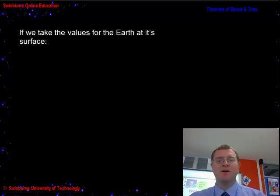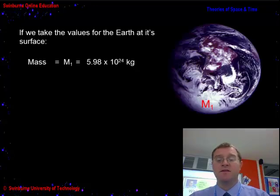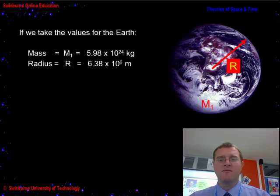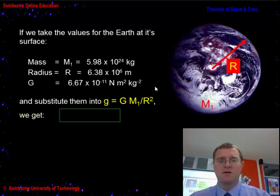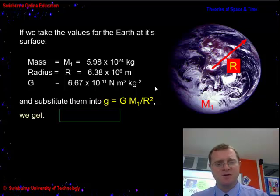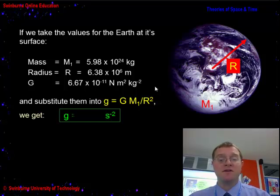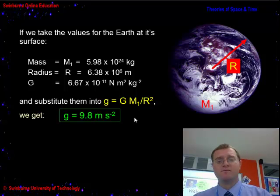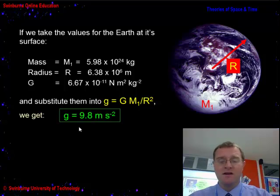If we take values for the Earth at its surface: the mass of the Earth is 5.98×10²⁴ kilograms, and the radius — the distance from the centre of gravity to the surface — is 6.38×10⁶ metres. With the gravitational constant of 6.7×10⁻¹¹, substituting these in, we get a gravitational field strength due to planet Earth at the surface of 9.8. That should be a value you're familiar with — g, or gravity on planet Earth, is equal to 9.8, because of the dominant effect of planet Earth on gravitational pull. It's the biggest thing in our sphere of influence.